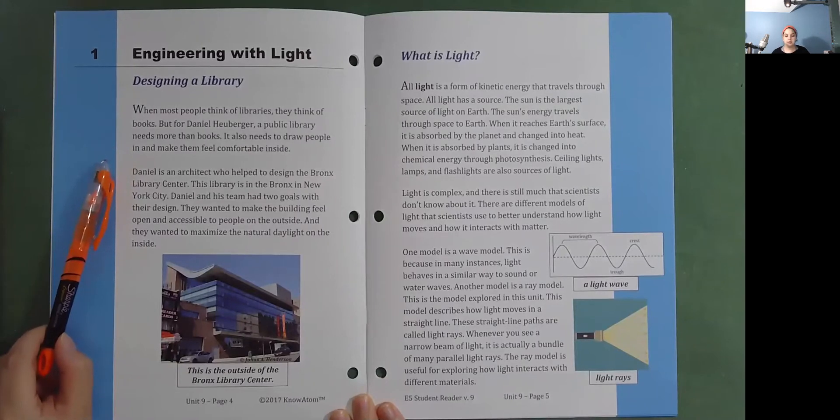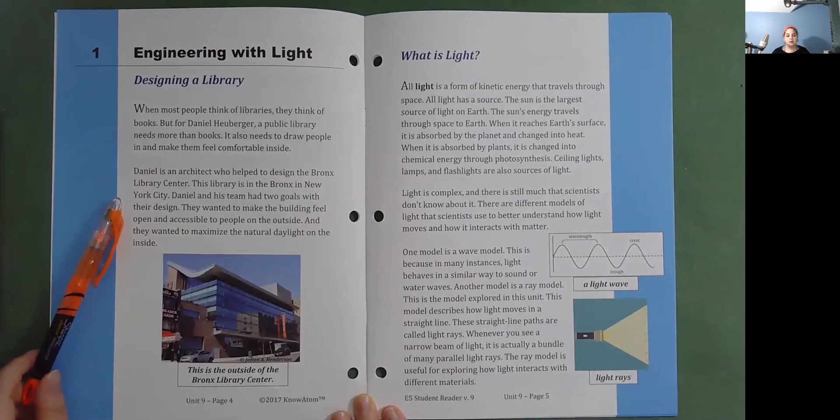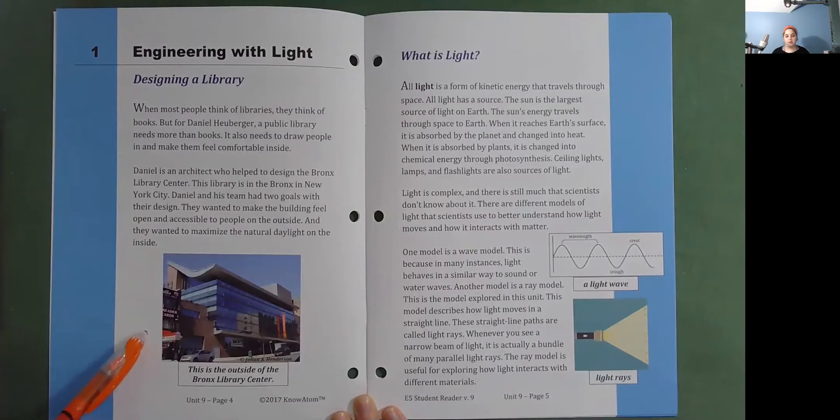Daniel is an architect who helped design the Bronx Library Center. This library is in the Bronx in New York City. Daniel and his team had two goals with their design. They wanted to make the building feel open and accessible to people on the outside, and they wanted to maximize the natural daylight on the inside.